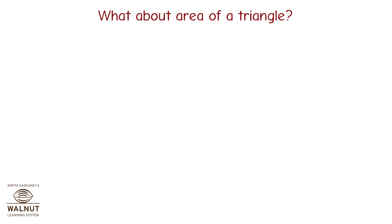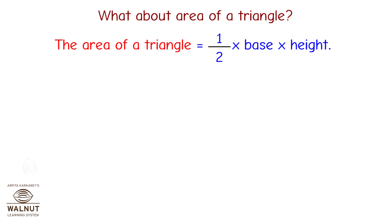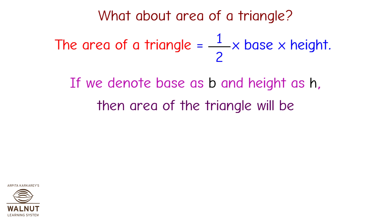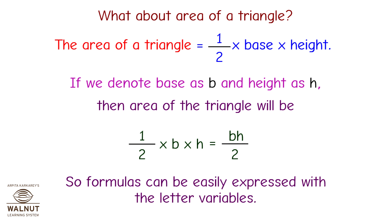What about area of a triangle? The area of a triangle is equal to half into base into height. If we denote base as B and height as H, then the area of the triangle will be half into B into H, which is equal to BH upon 2. So formulas can be easily expressed with letter variables.